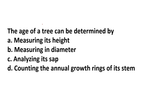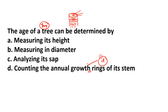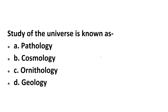How can the age of a tree be determined? You cannot tell from its height or diameter, and not from the ascent of sap. But every year as the tree's tissue develops, annual growth rings are formed. By counting these rings after cutting the tree, you can determine its age. So D — counting growth rings — is the correct answer.